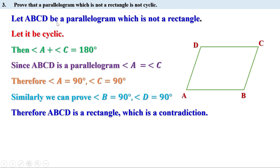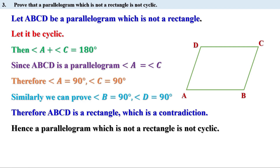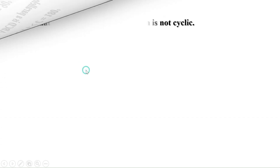We have taken ABCD as a parallelogram which is not a rectangle, but we got that ABCD is a rectangle — a contradiction. Why did we get a contradiction? Because we started wrong by assuming it was cyclic. Hence we can say it is not cyclic. That is, a parallelogram which is not a rectangle is not cyclic.